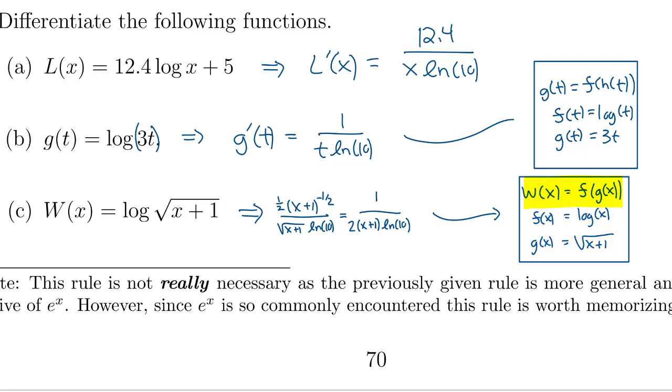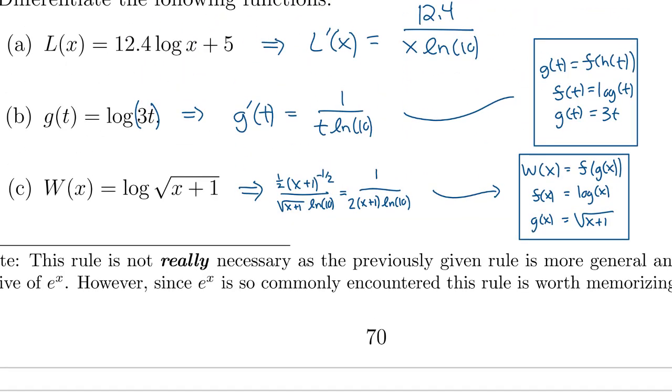So in general when you see a logarithm if it's not just log of x or log of t like in part a, then you can't apply the rule directly and you have to use chain rule. So in part b and c we have 3t inside the log and the square root of x plus 1 respectively. So that gives you a clue that whenever you see things of this form that you need to apply chain rule to find the derivative and the inner function will be the thing inside of the log and the outer function will be the log in this case.